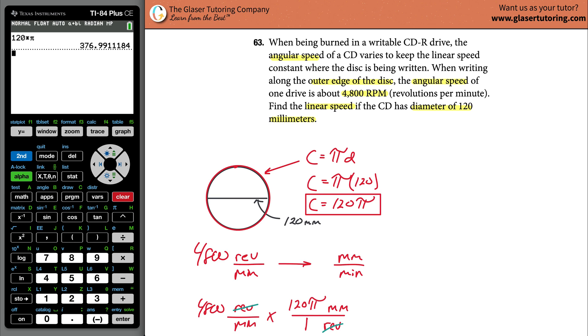Then notice how beautifully this math will cancel—the revolutions—and then you just plug it into the calculator. So take your 4,800 and then multiply it by the 120π, or you can just take that answer that's already in your calculator. So hit second answer, it'll plug that 376.9 whatever, and that's your answer.